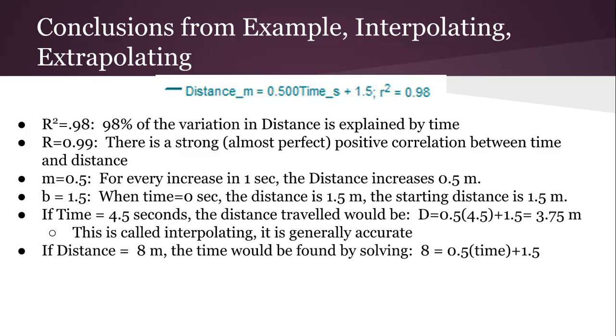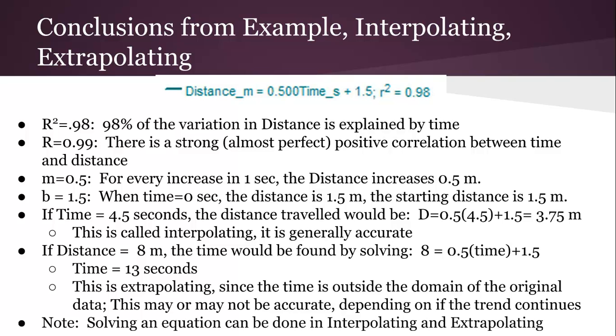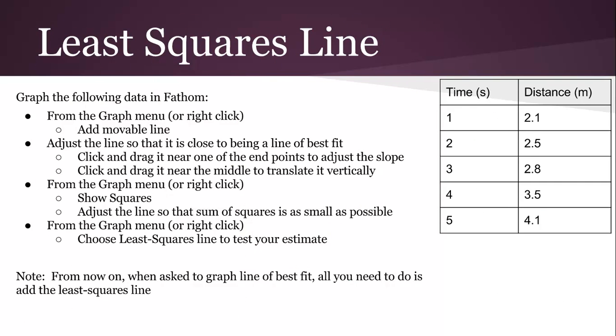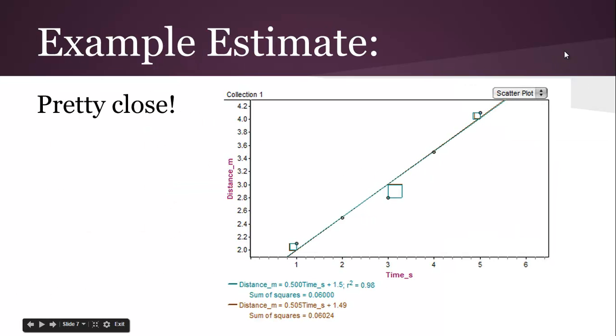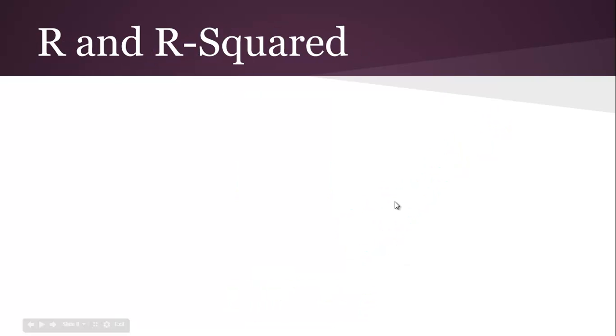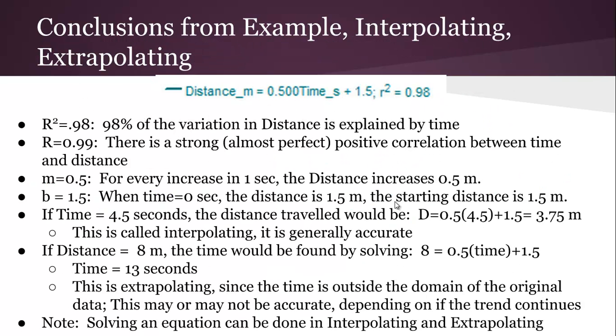And then if distance is 8, you'd actually have to solve the equation. We'd solve the equation and say that the time is 13. This is called extrapolating. It's not because we're solving an equation, it's because the answer of 13 seconds is outside the domain. So you can solve the equation or just plug in for interpolating or extrapolating. That's not the distinction. It's just that it's outside the domain. So we're really not sure if the distance is 8 and the time is 13, will that actually work? Because we're not sure about the model because the distance of 8 and the time of 13 is way outside the data that we've been given. So we're not really sure if we should rely on that. We just got to be careful.